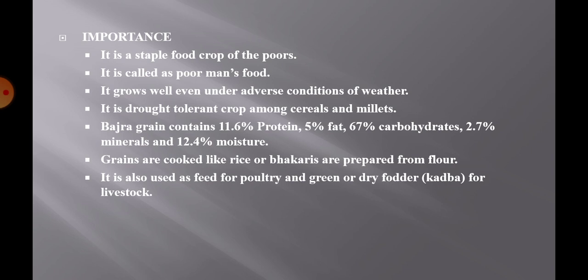Bajra grains contain 11.6% protein, 5% fat, 67% carbohydrates, 2.7% minerals and 12.4% moisture. Grains are cooked like rice or bakris are prepared from Bajra flour. It is also used as feed for poultry and as green or dry fodder for livestock. Nowadays, due to its rich protein, fat, carbohydrates and minerals, Bajra flour is also used in baking industries.